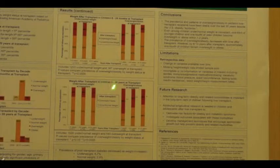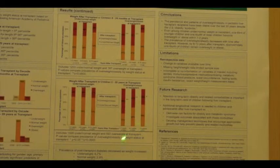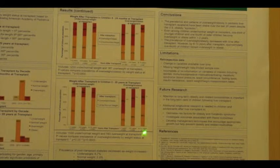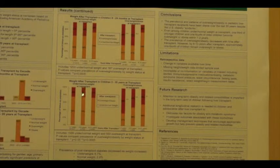Among children 2 to 20 years at transplant, we found that those who were overweight or obese at transplant were significantly more likely to be overweight or obese at 1 to 2 years, 4 to 6 years, and 8 to 10 years follow-up after transplant compared to those who were under normal weight at transplant. Of note, even among those who were under normal weight at transplant, approximately one third of younger children and one fourth of older children were overweight or obese in long-term follow-up.